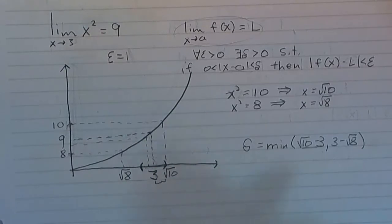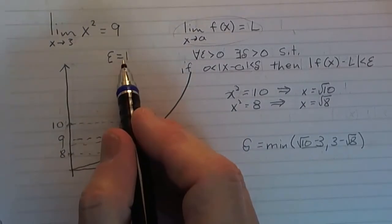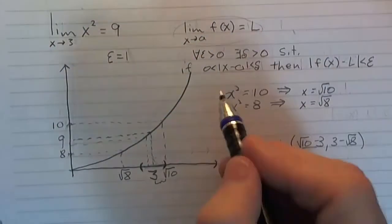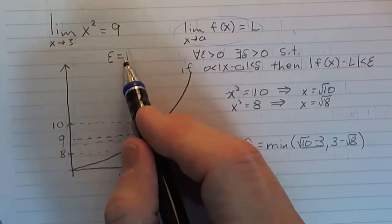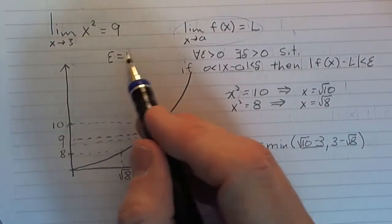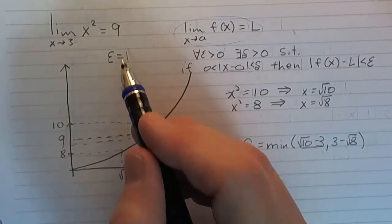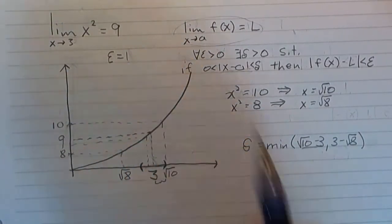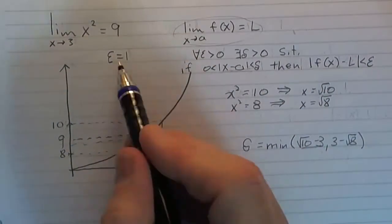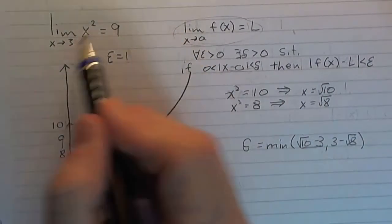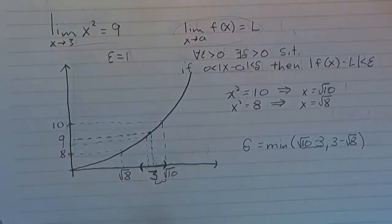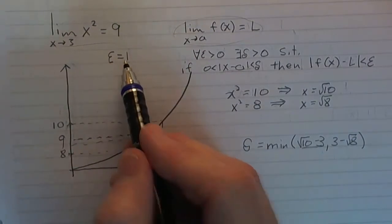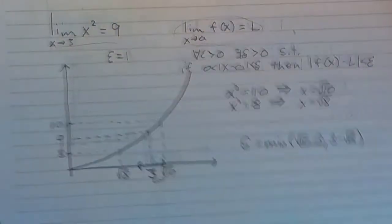We chose epsilon equals 1, but I could have played this same game if epsilon were equal to 0.1, 0.01, or 0.001. I have provided evidence that this limit is true because you gave me an epsilon and I found the delta.